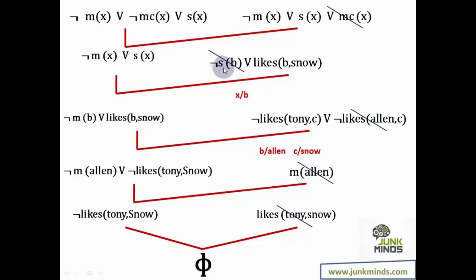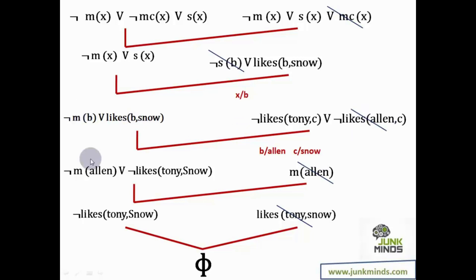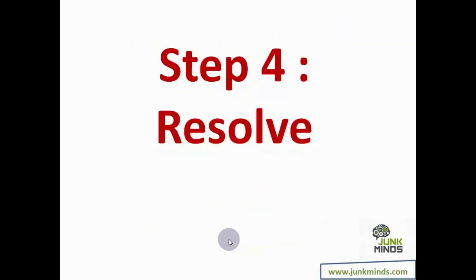Then I take this predicate where I can cancel off terms, replacing X with B. For cancelling the remaining terms, I take predicates from step two. Likes(B, snow) cancels with not likes(Alan, C) by replacing B with Alan and C with snow — a variable can always be replaced with a proper noun. After cancelling, what remains leads to the final conclusion: yes, there is a member who is a mountain climber but not a skier.